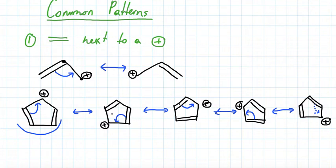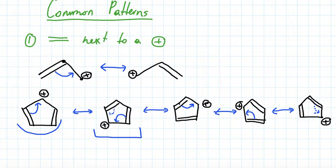Notice that if I try to move one more double bond at the end, I would just return to the original molecule, confirming I have exhausted all resonances. Also, the total charge for each one of these molecules I've drawn is plus one — so rule number two is satisfied. My total charge for each resonance structure is the same.